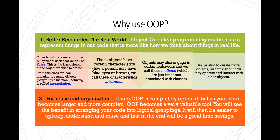The first reason is it better resembles the real world. Object-oriented programming enables us to represent things in our code in a way that is more like how we think about things in real life. Objects will get created from a blueprint of sorts that we call a class — this is the basic design of the object we wish to create. From the class, we can manufacture many objects; think of them as offspring. This manufacturing is called instantiation. These objects have certain characteristics, like a person may have blue eyes or brown. We call these characteristics attributes.